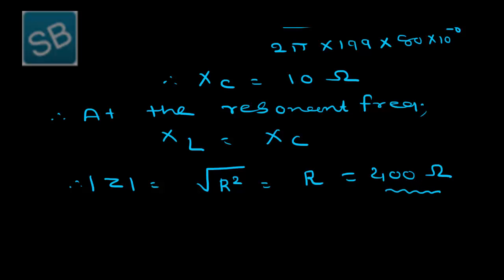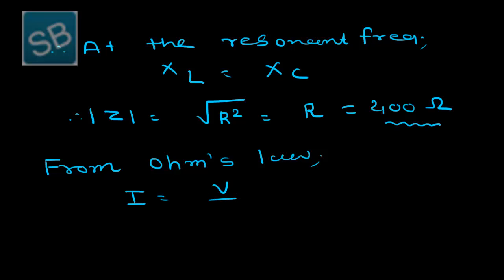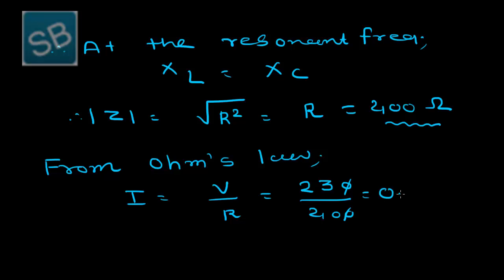According to Ohm's law, the current I equals V over R. The value of V is 230 and the resistance is 400 ohm. So the final answer is 0.575 ampere. This is the value of electric current at resonance.